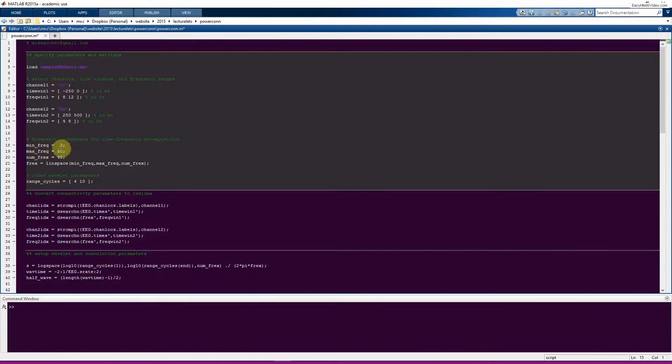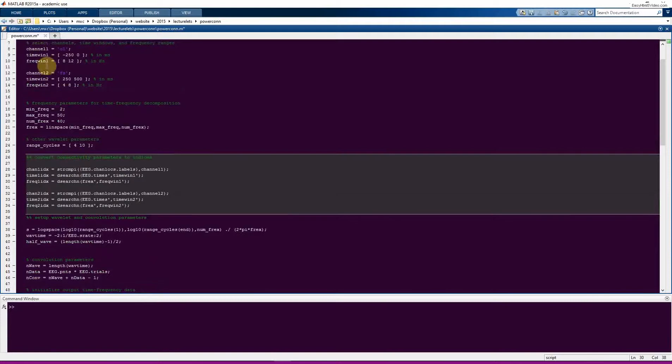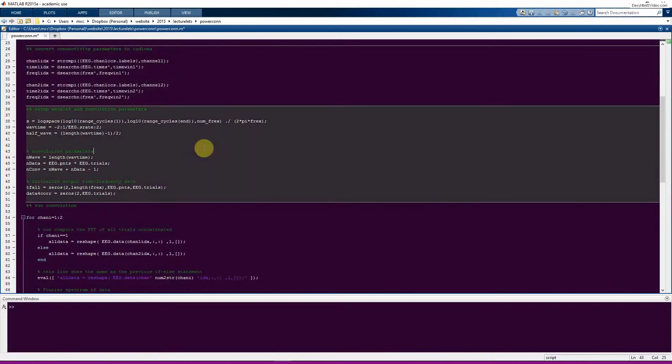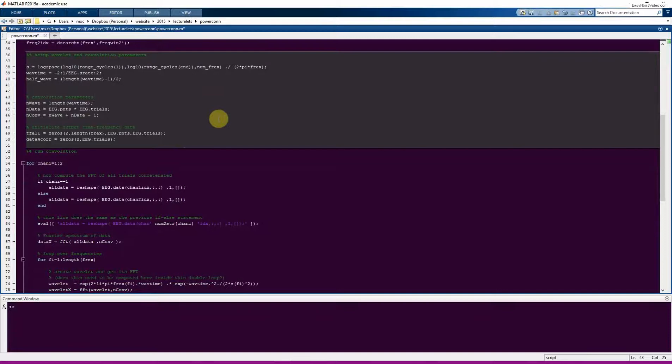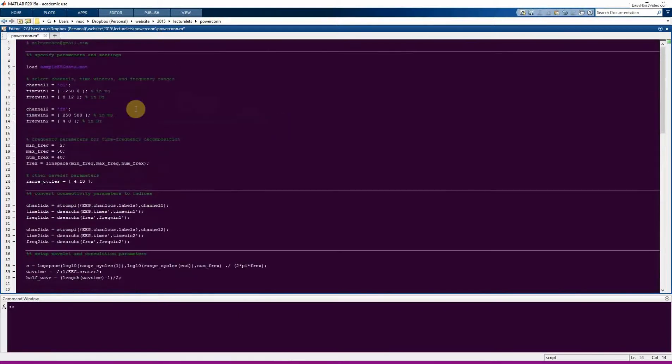Here we have the parameters for the normal time frequency analysis. So run this. Here I'm just converting these parameters into indices. So this is the index of this first channel O1, the time points, the frequency indices, and so on. So here we set up wavelet convolution. This is nothing new in this code here. This is all stuff that we've covered in previous lecturelets.